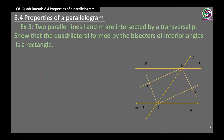Next example: two parallel lines L and M are intersected by a transversal P. Show that the quadrilateral formed by the bisectors of the interior angles forms a rectangle. A quadrilateral is a parallelogram if opposite sides are parallel, and a parallelogram is a rectangle if one of its angles is 90 degrees.